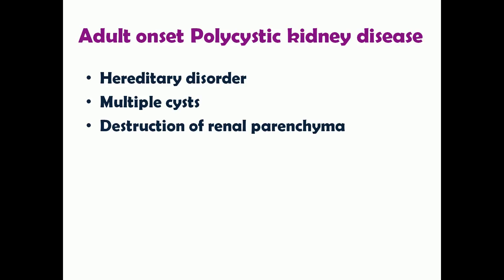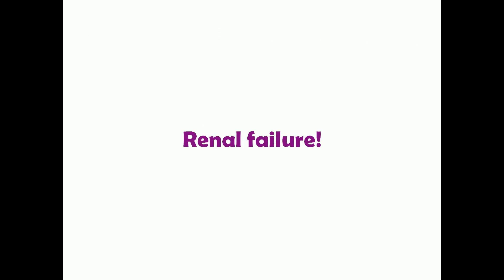Adult onset polycystic kidney disease is a hereditary disorder characterized by multiple cysts over the kidney, accompanied by destruction of the renal parenchyma, all of which finally leads to renal failure.